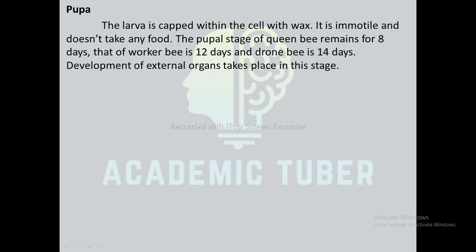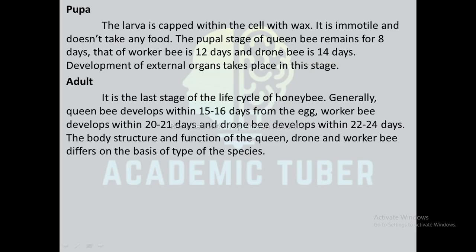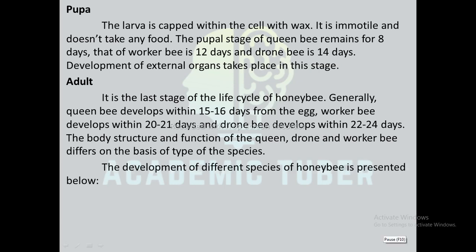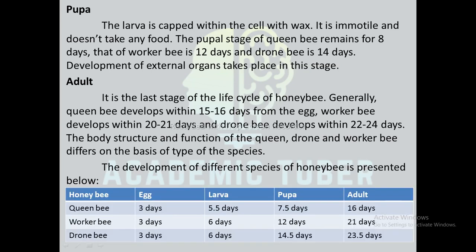Development of external organs takes place in the pupa stage. The adult is the last stage of the life cycle of the honey bee. Generally, the queen bee develops within 15 to 16 days from the egg, the worker bee develops within 20 to 21 days, and the drone bee develops within 22 to 24 days. The body structure and function of the queen, drone, and worker bee differs based on their type.